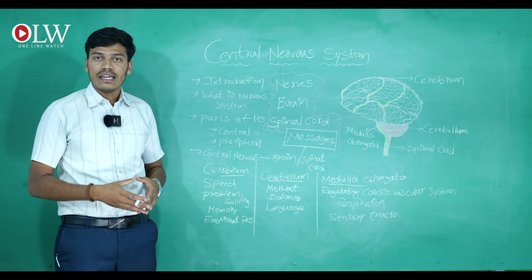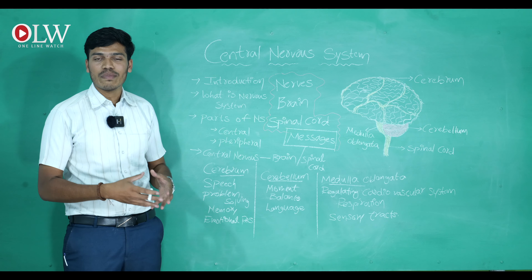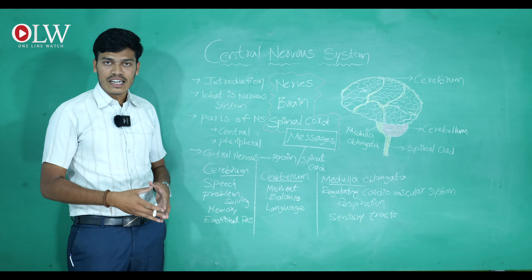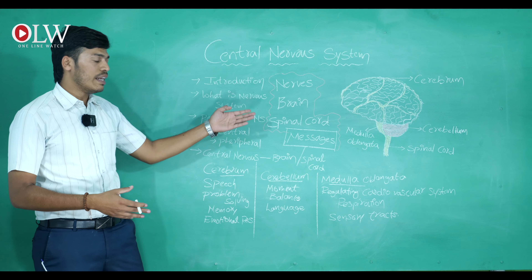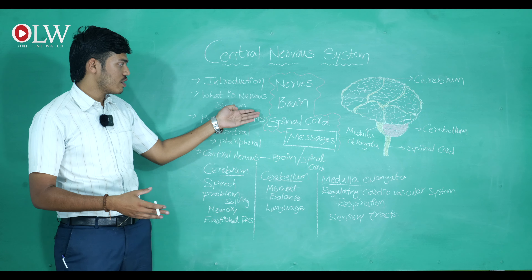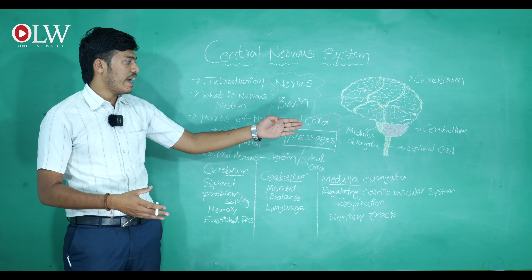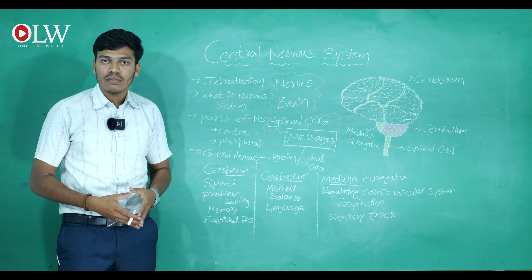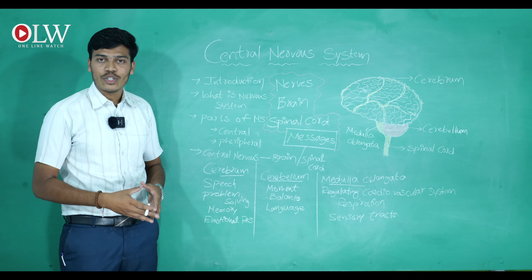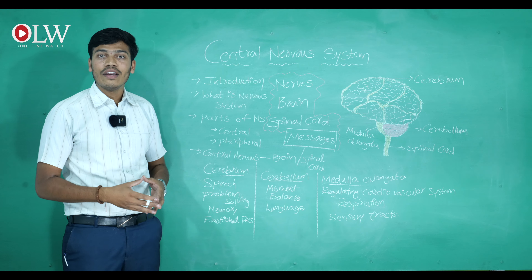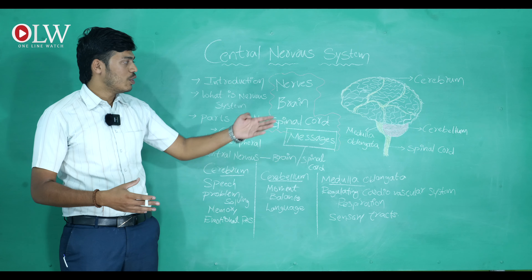The nervous system consists of two types: the central nervous system and the peripheral nervous system. The central nervous system consists of two parts — the brain and the spinal cord. Those are the two parts involving in the central nervous system.